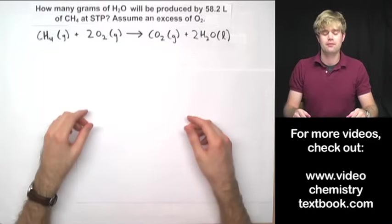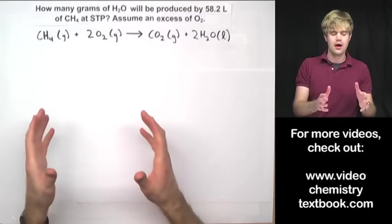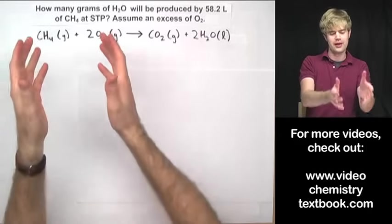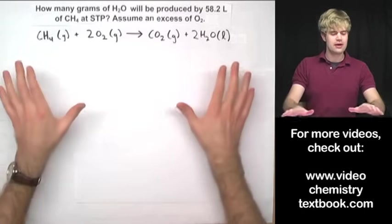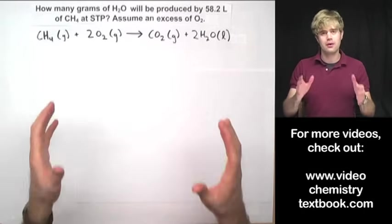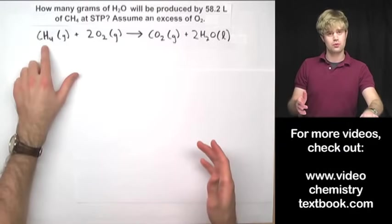Here's a gas stoichiometry problem. This is the sort of thing where we're given an equation like this and we have to calculate the amount of chemicals that are going into the equation or coming out of it. What I have right here is the equation for the combustion, also known as the burning, of natural gas, which is methane.